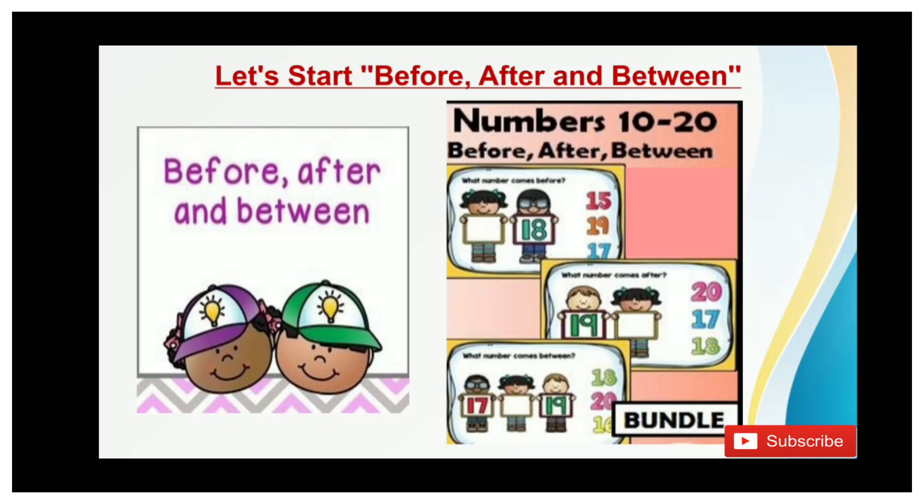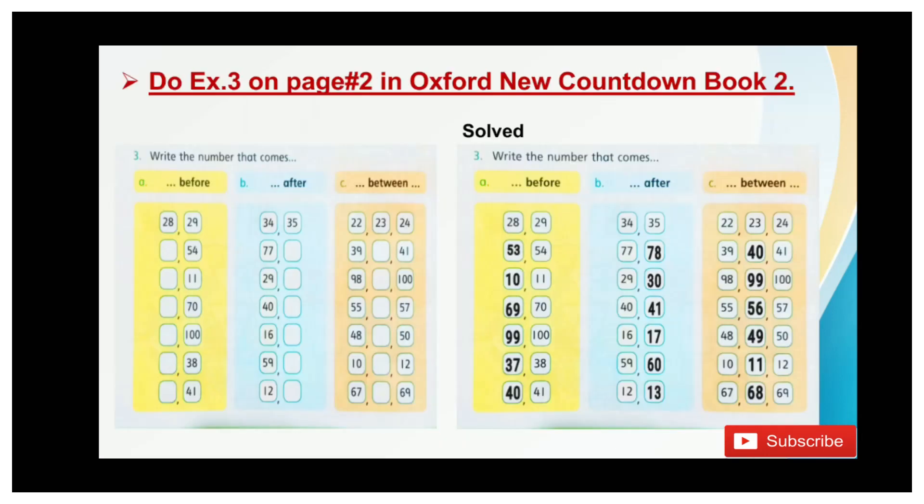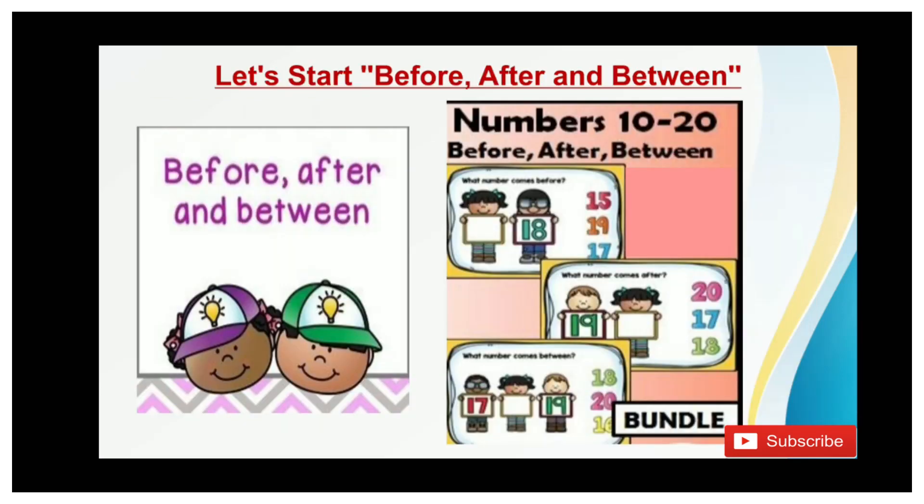Now students, let's start numbers counting which comes before, after, and between. So in the first picture, what come before? Yes, it is 17. In the second picture, what come after? Yes, it is 20. In the third picture, what come between 17 and 19? It is 18. Let's start the exercise now. As you all remember the counting, you can do this exercise very easily.